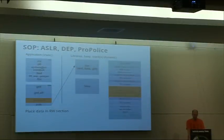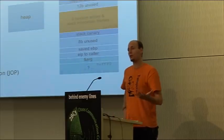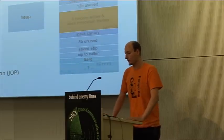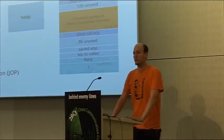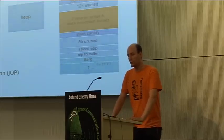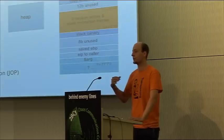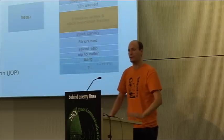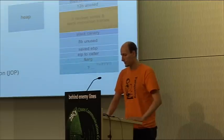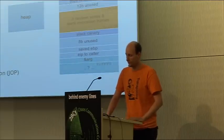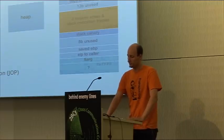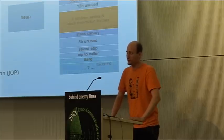So the first two writes put '/bin/sh' — eight bytes long — in there. The third write redirects one of the imported functions. We can no longer easily redirect the return instruction pointer on the stack, so we have to override a specific function that is called in the control flow of the application after our exploit takes place. In our example, the puts function is executed right after the return from printf, so we override the puts slot in the GOT.